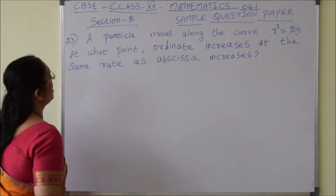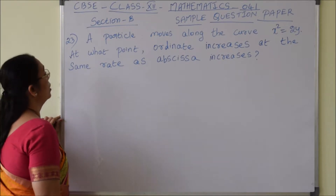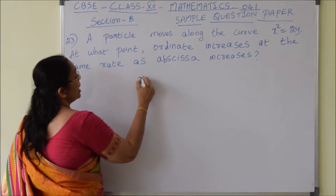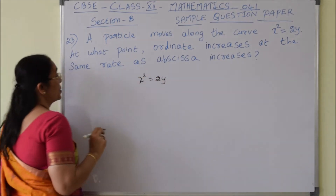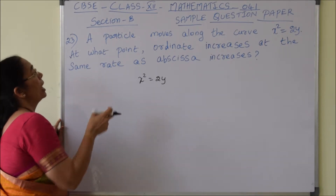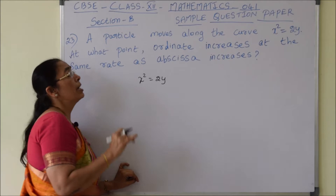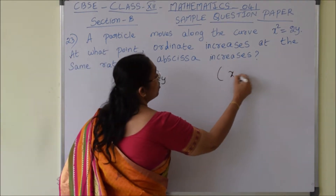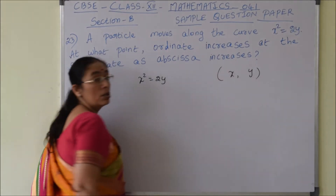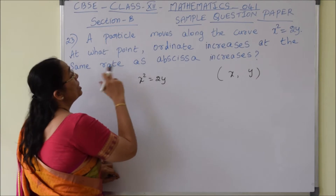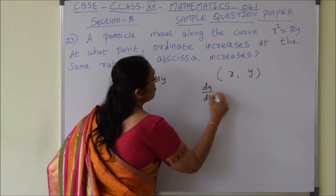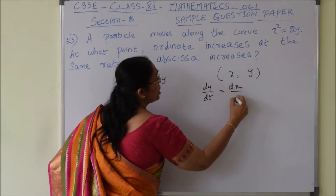Question number 23: a particle moves along the curve x² equals 2y. The question is: at what point does the ordinate increase at the same rate as the abscissa increases? For coordinates (x, y), x is called the abscissa and y is called the ordinate. According to our condition, dy/dt must be equal to dx/dt.